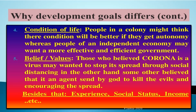Beliefs and values also shape developmental goals. Those who believe that COVID is a virus may want to stop its spread through social distancing, while others who believe it is an agent sent by God to punish the evil may encourage its spread. So people have different values and goals. Besides that, experience, social status, and income are also factors that create different aspirations for developmental goals.